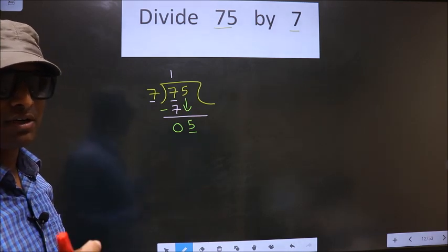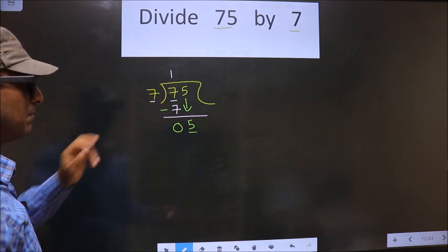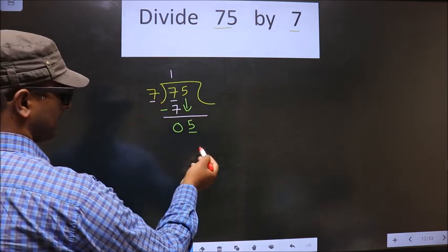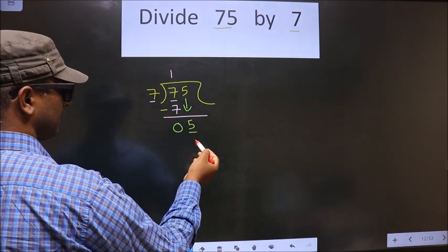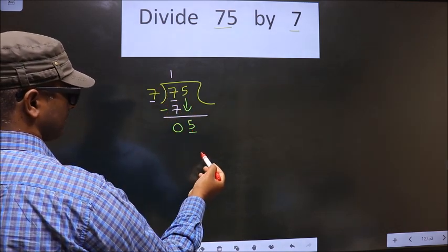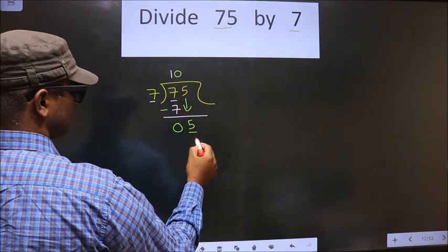Instead, what you should think of is, to this number, what shall we multiply to get a number here? If we multiply by 1, we get 7 here. 7 is larger than 5. So we should multiply by 0. So 7, 0, 0.